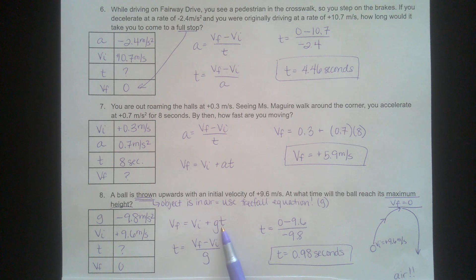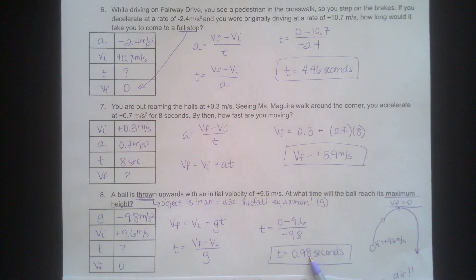You're setting VI is 9.6 and VF is 0. You have G, you need to solve for T. Here's the free fall equation rearranged to solve for T. You end up dividing negative 9.6 by negative 9.8 to get about 1 second.